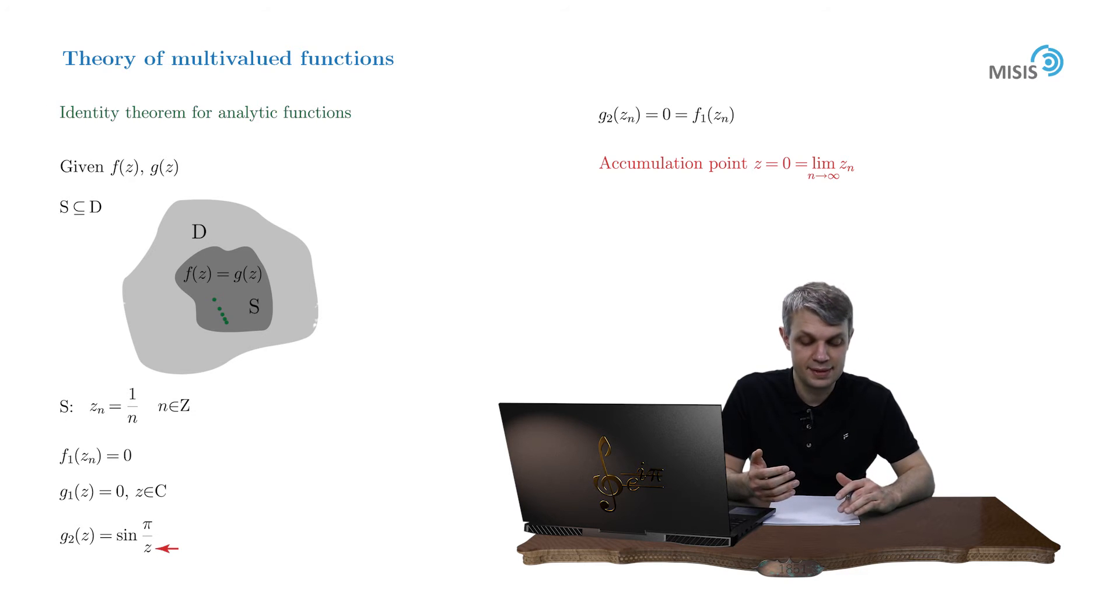Because the theorem tells us that the subset S should have an accumulation point belonging to the domain of analyticity of our function, but this is not true here. That is why we have to put up with the trivial analytic continuation g₁ equals 0.